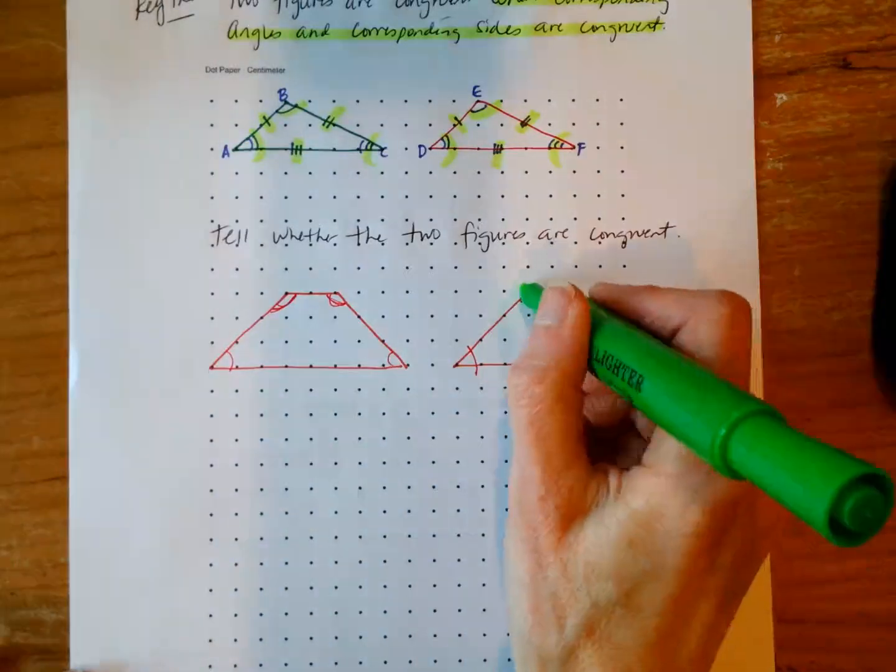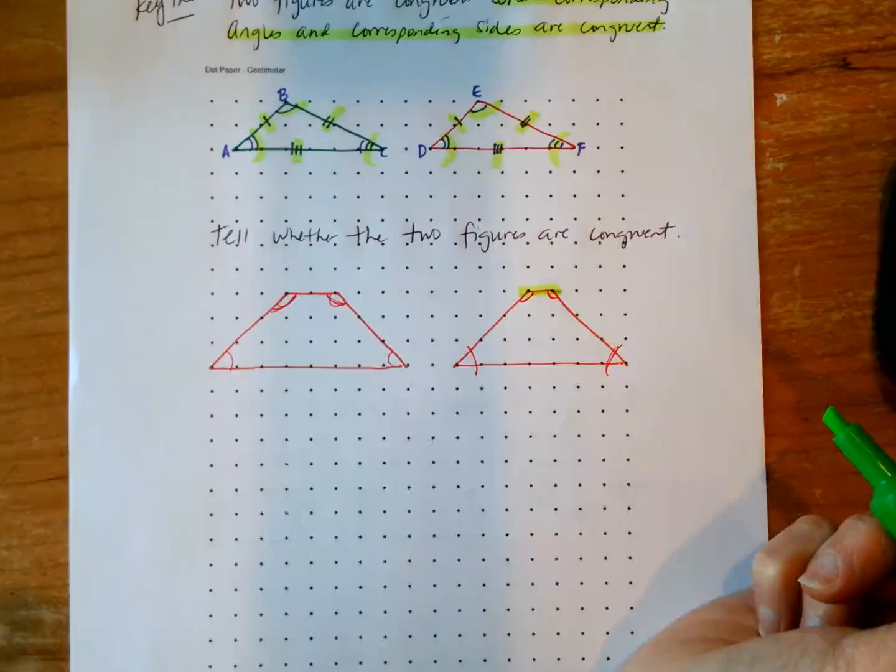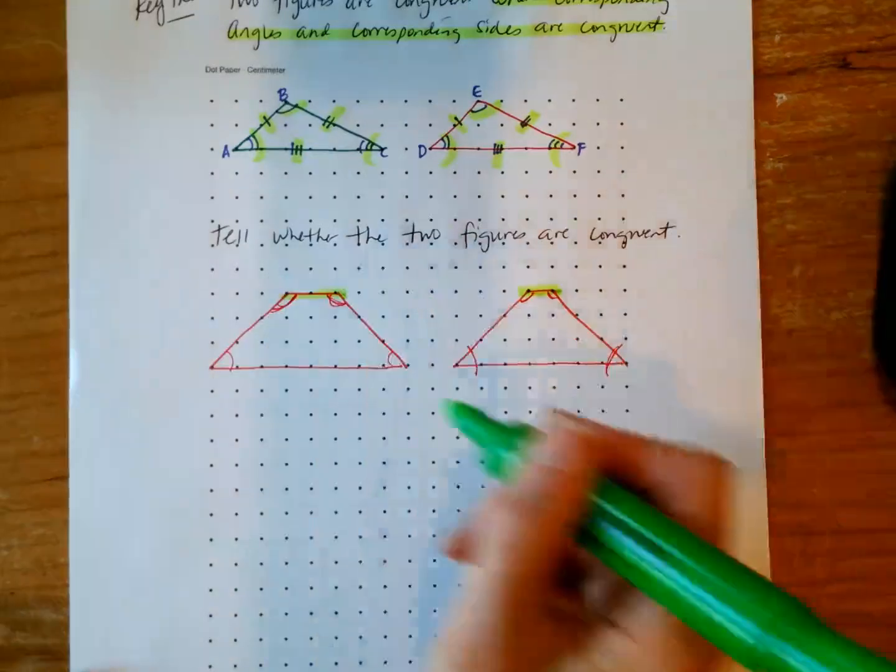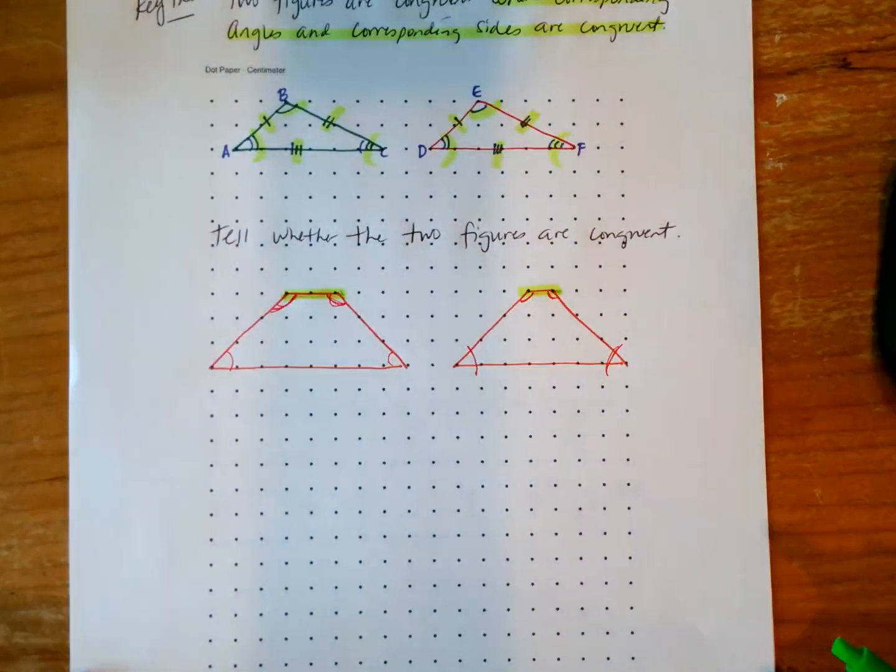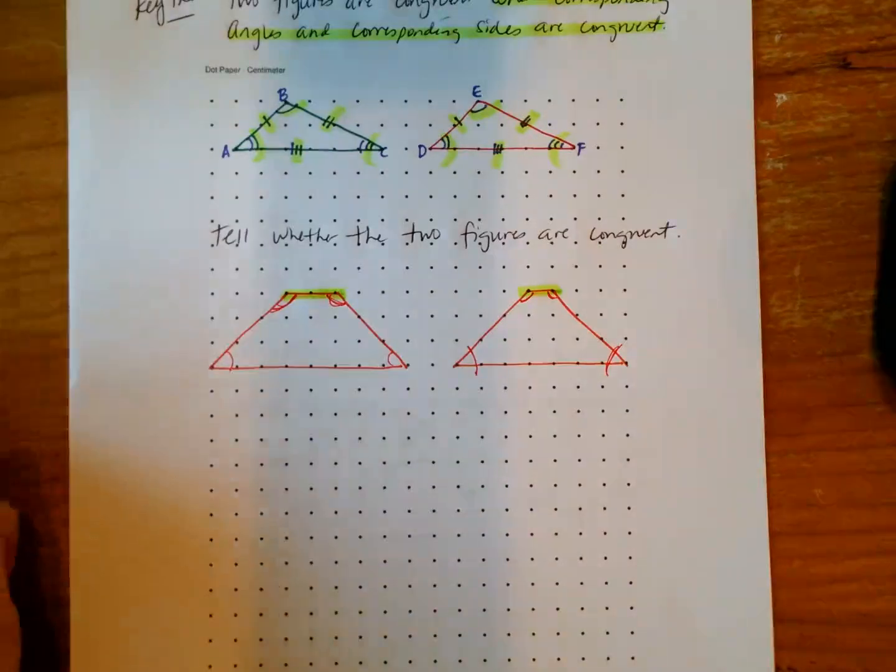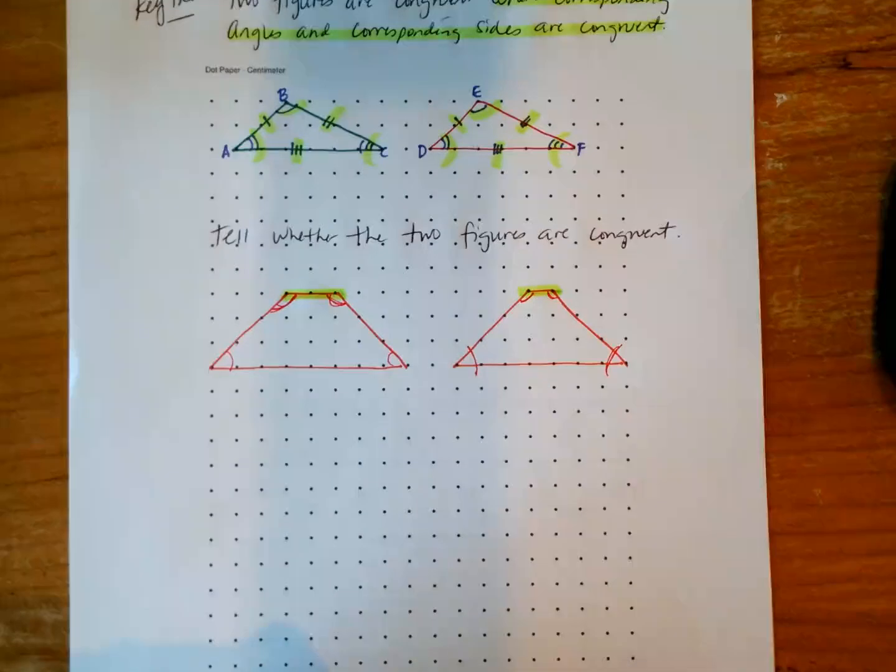And that would be because these sides are not congruent. So we've got a space of two dots here. And then here, you've got three dots that are connected. I don't need to do any further investigation than that to find or to justify whether these are congruent or not. If you find one side or one angle that are not the same, then the shape cannot be congruent.